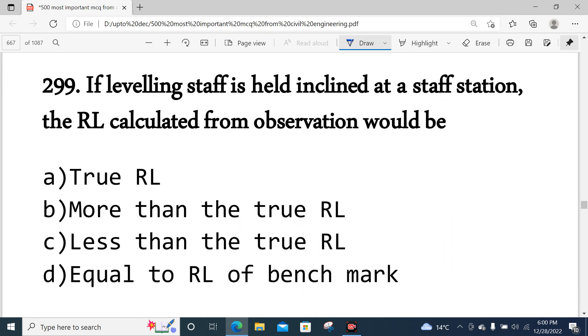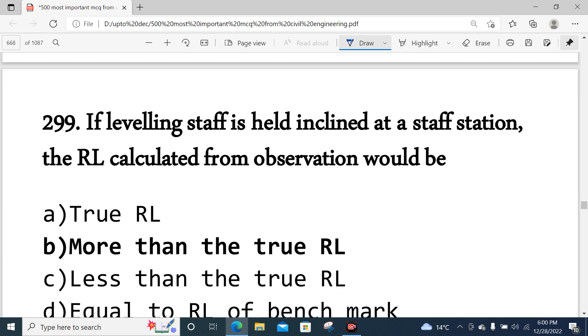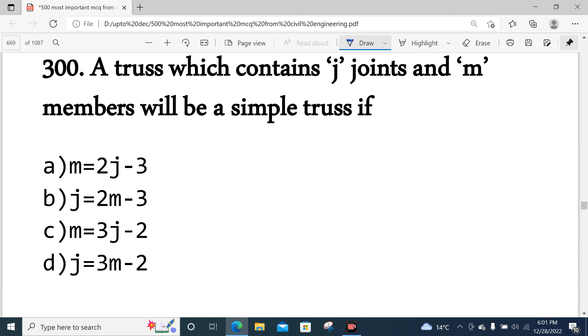Question 299: If the leveling staff is held inclined at a staff station, the RL calculated from observation would be more than the true RL. If the staff is inclined, the reading will be more compared to the true reading. Option B is correct.